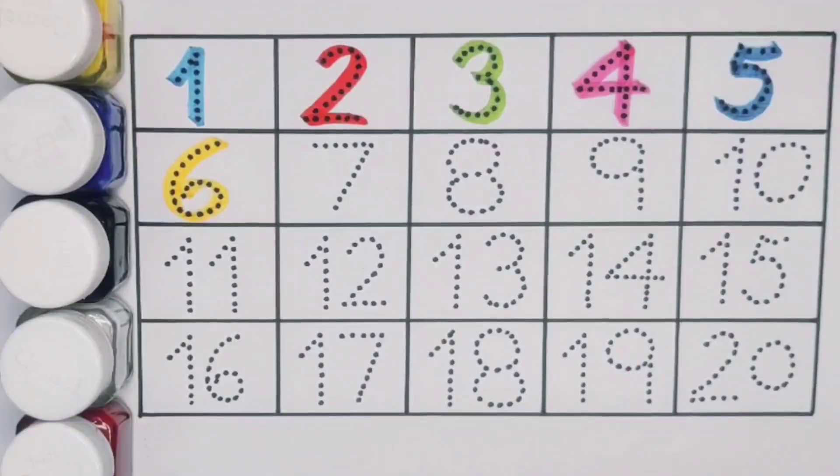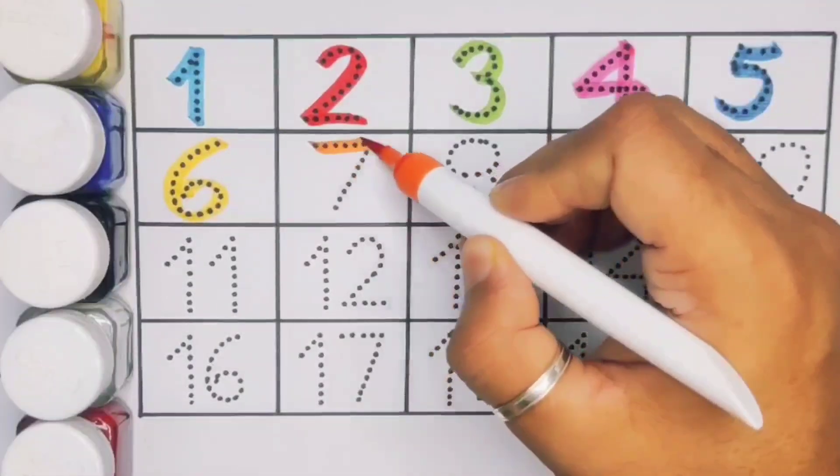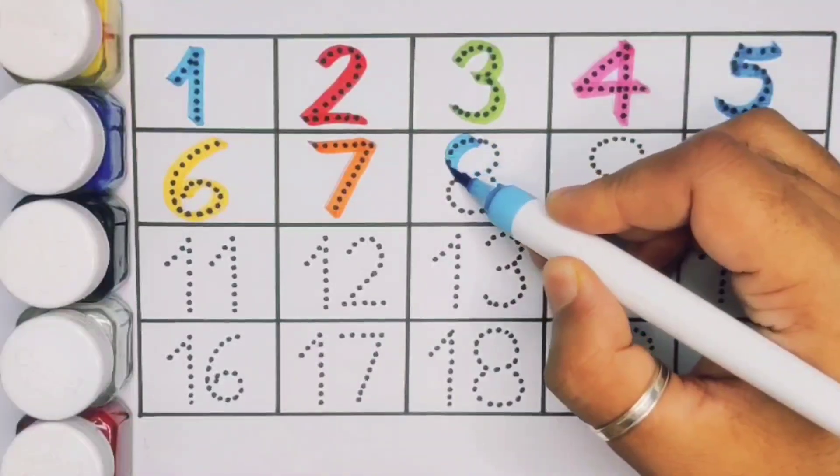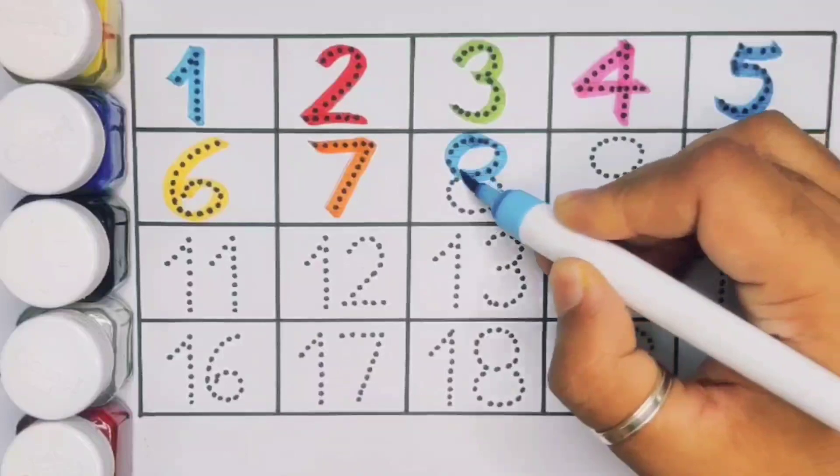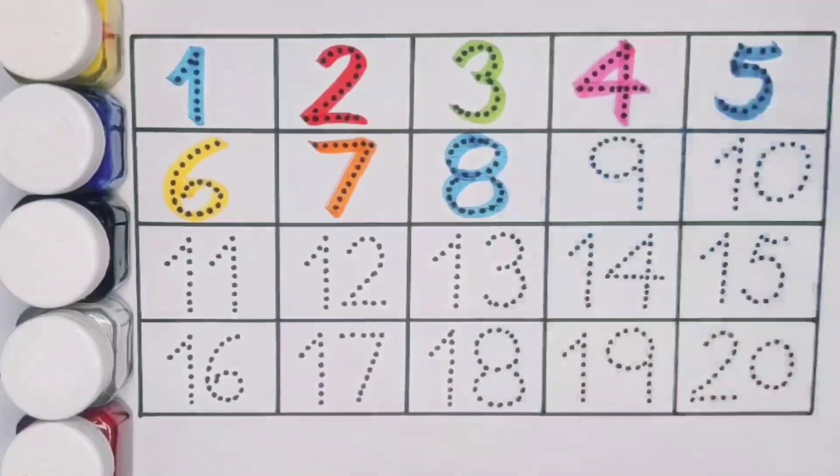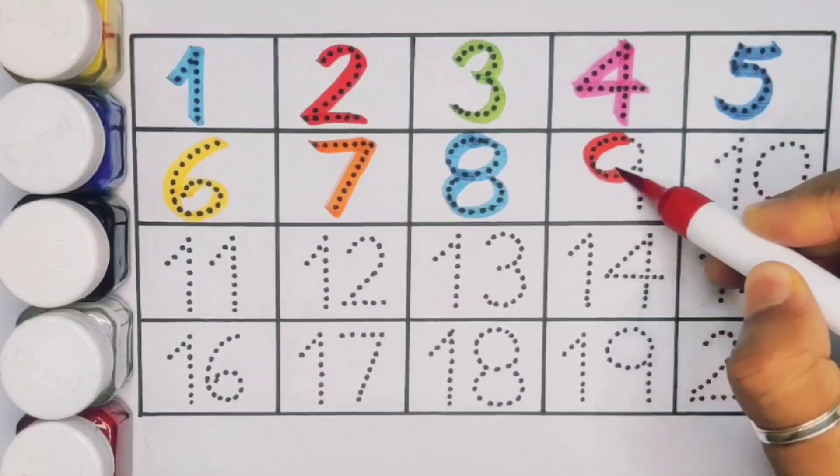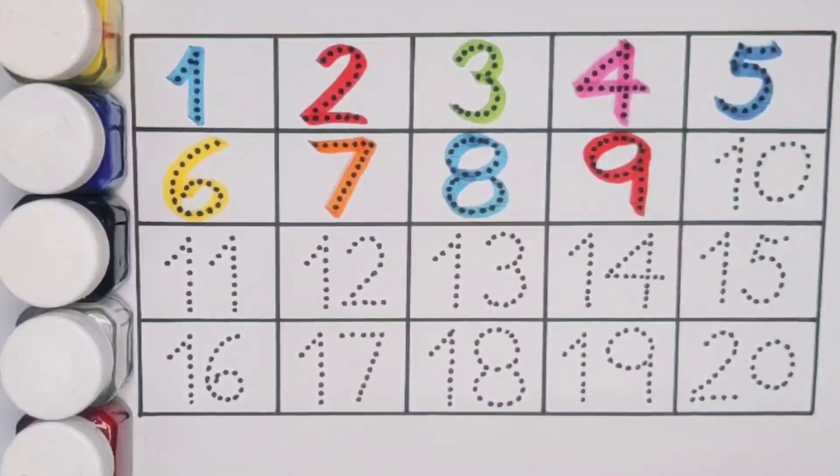Next kids 7, number 7. Next 8, number 8. Next kids 9, number 9.